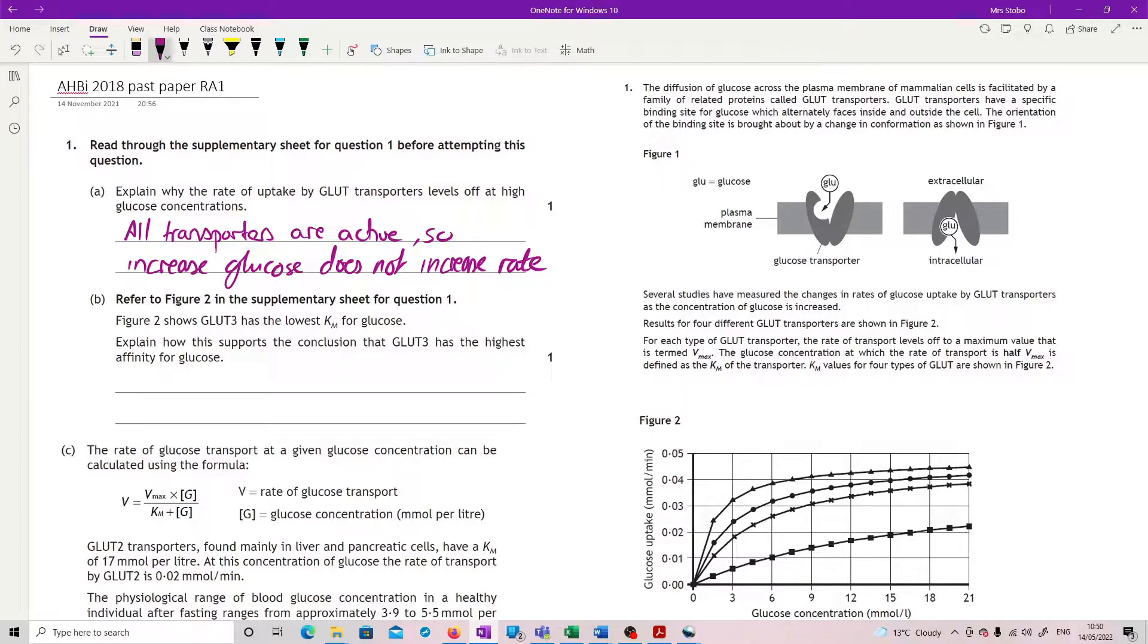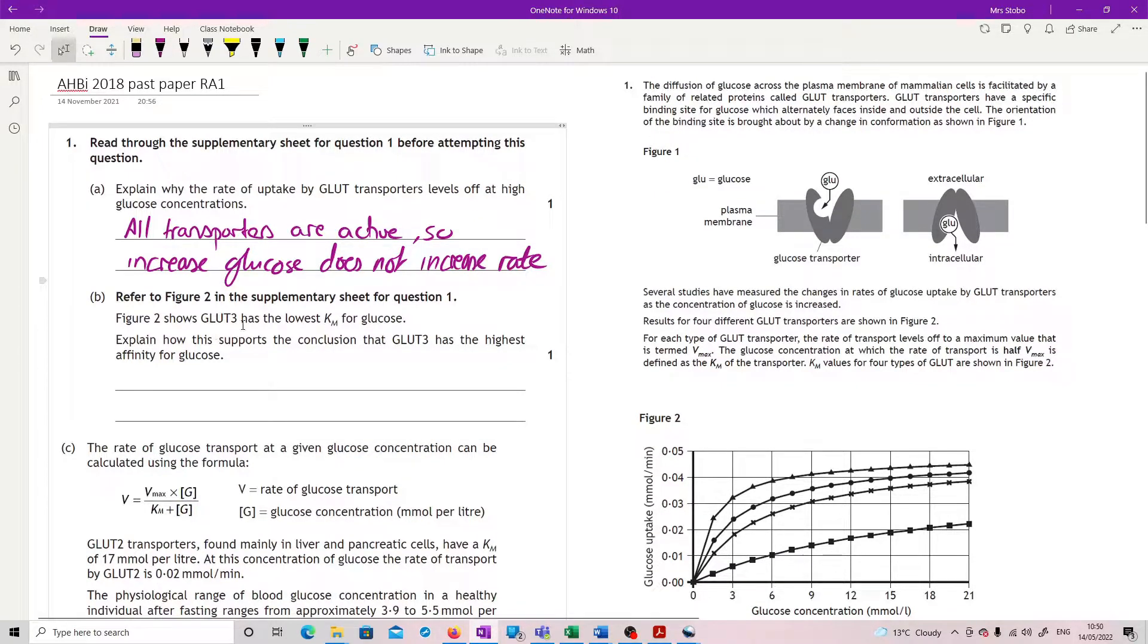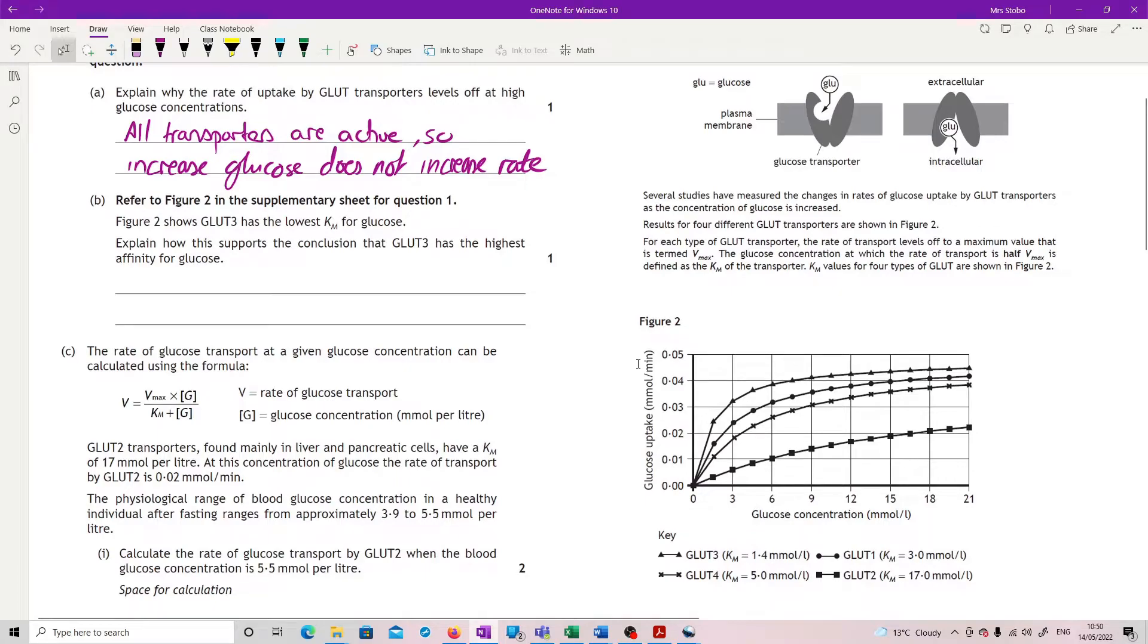Refer to Figure 2 in the supplementary sheet. Figure 2 shows GLUT3 has the lowest Km. Explain how this supports the conclusion that GLUT3 has the highest affinity for glucose. Right, so if you know this already you're great. If you're not, you're going to have to read this section up here.